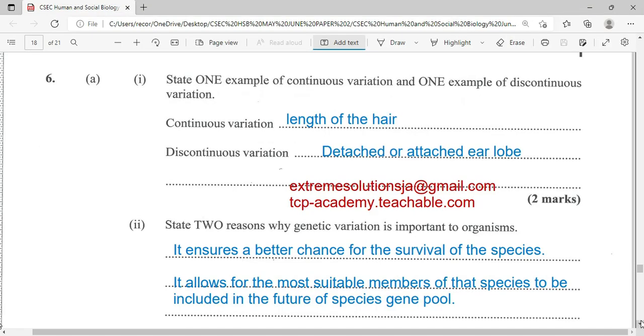State two examples of continuous variation and discontinuous variation. This is question number six and the final question for your 2021 paper. Now continuous variation tends to have a midpoint: 1.2, 1.3, 1.4. So there's some intermediate there. The length of your hair, the mass of an individual, the color of the skin - they are different degrees. Those are all in continuum. So they are continuous variation.